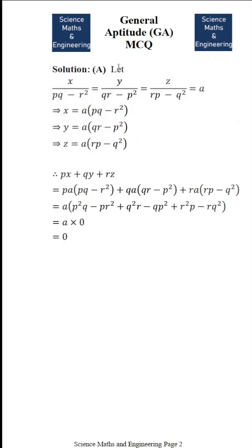So the answer is, we let x by pq minus r square is equal to y by qr minus p square is equal to z by rp minus q square is equal to a.